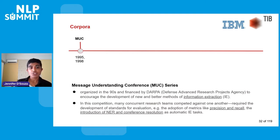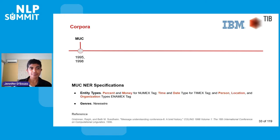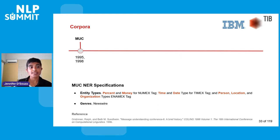Starting with corpora. In the 90s, the MUC series was organized and financed by DARPA to encourage the development of new methods of information extraction. This shared task series introduced evaluation measures still in use today, such as precision and recall. The MUC corpus focused on annotating entity types — percent, money, time, date, person, location, and organization — on articles in the newswire domain.